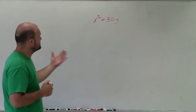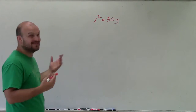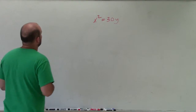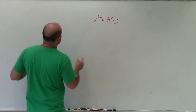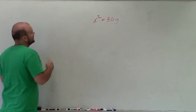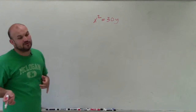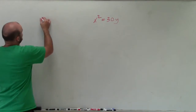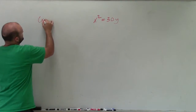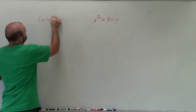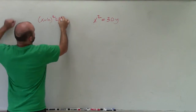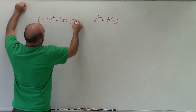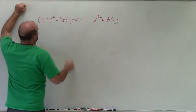Since we know x is squared, we can use the equation to identify our vertex as well as the value of p by looking at our general form, which is x minus h squared is equal to 4p times y minus k.